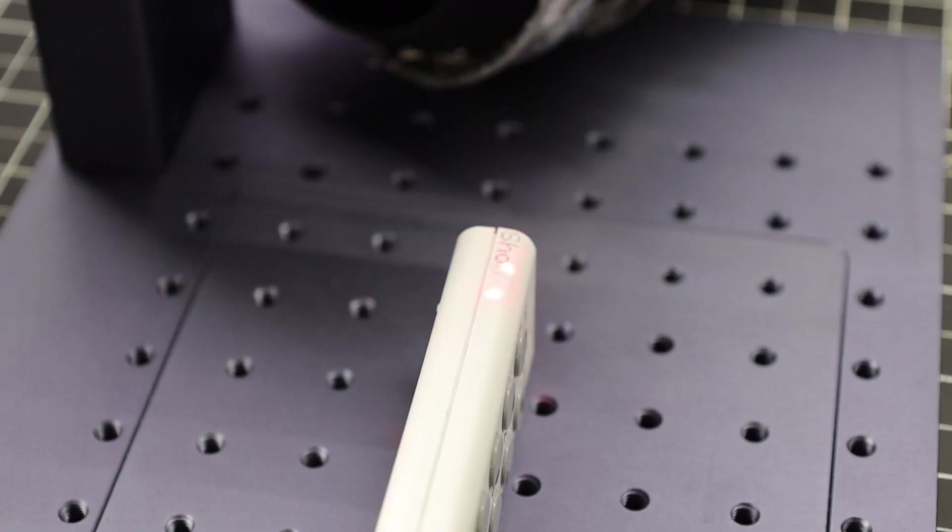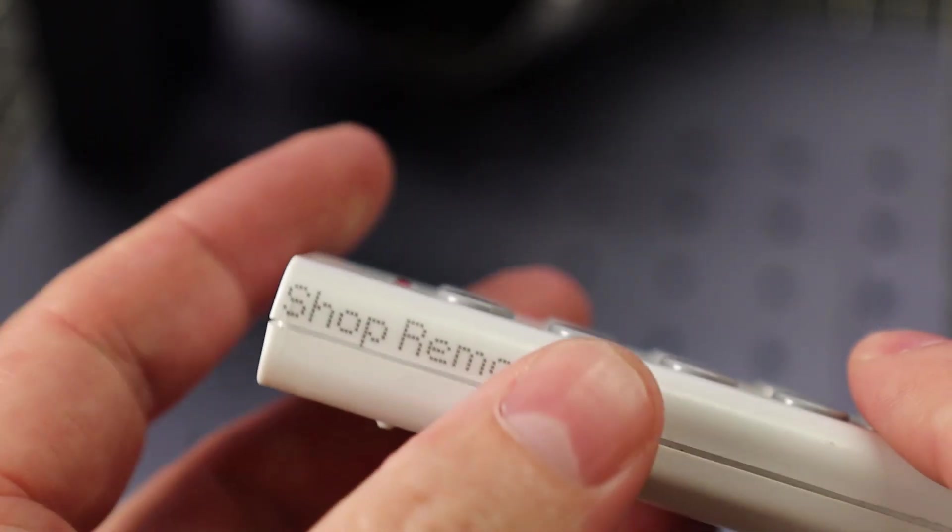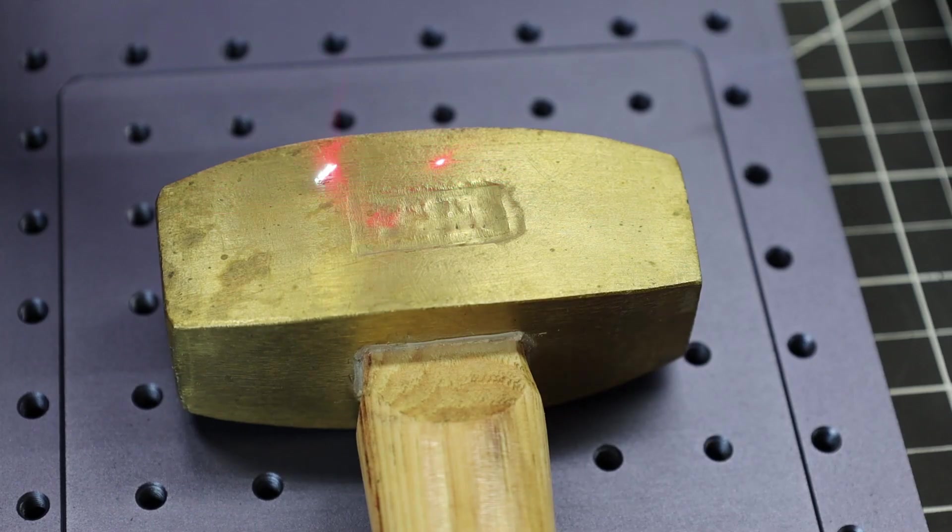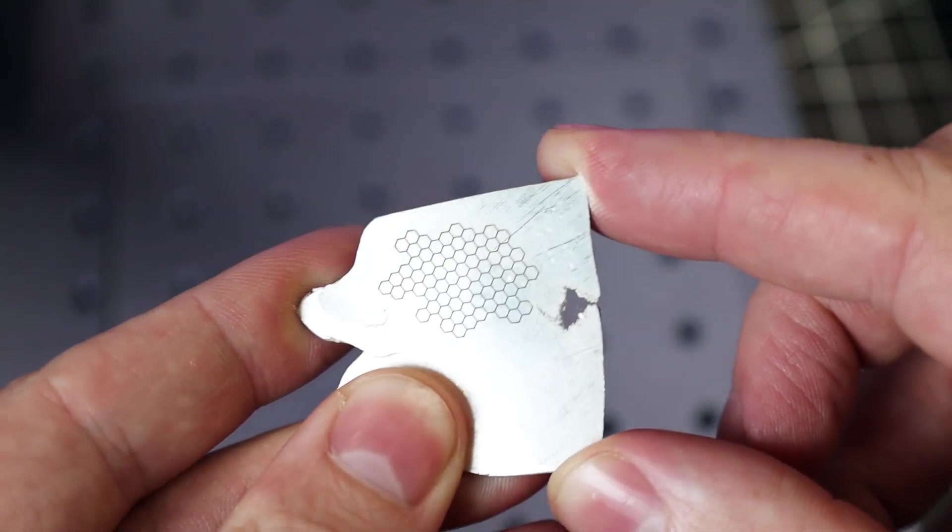And you're not limited to just metal on this machine, you can also mark on plastics. And on white plastics, it leaves a very nice black marking. It also marks really well on brass, as you can see on my brass hammer. And it can also do the same thing to silver, copper, and gold.